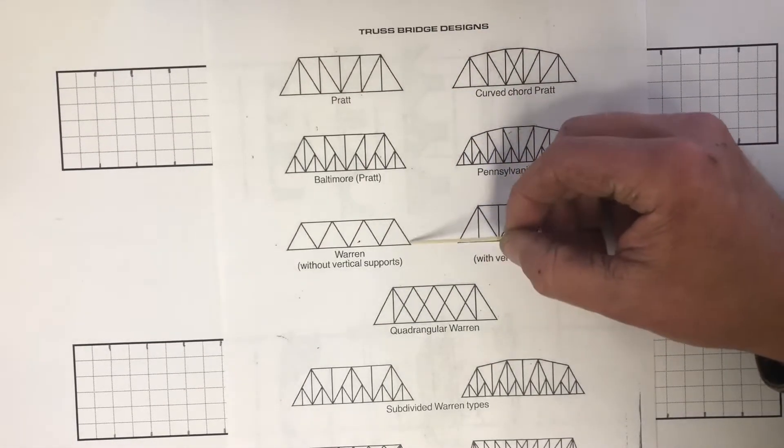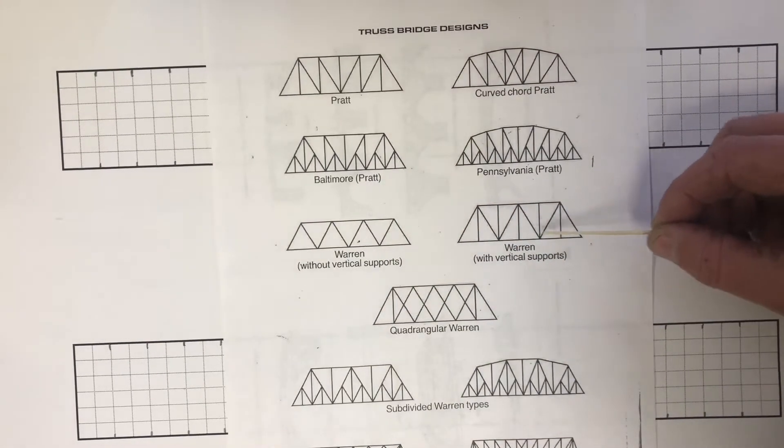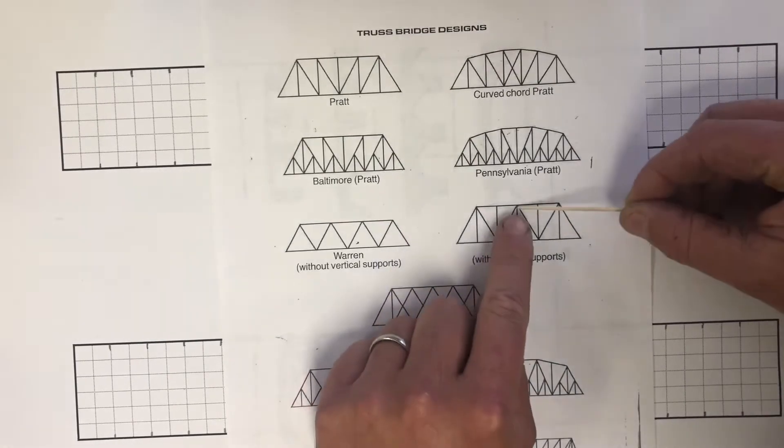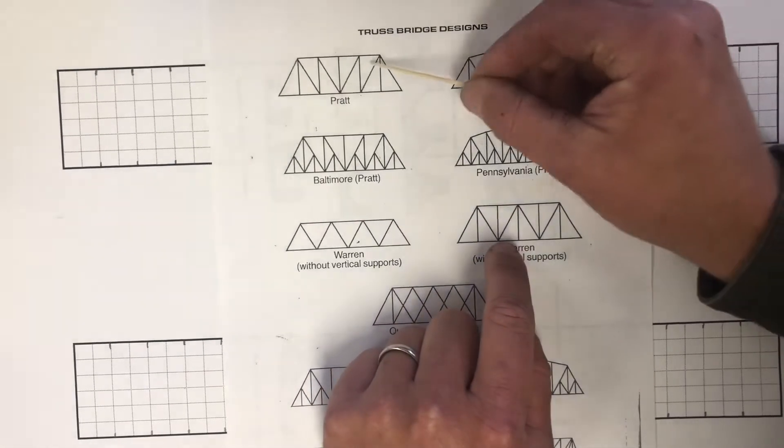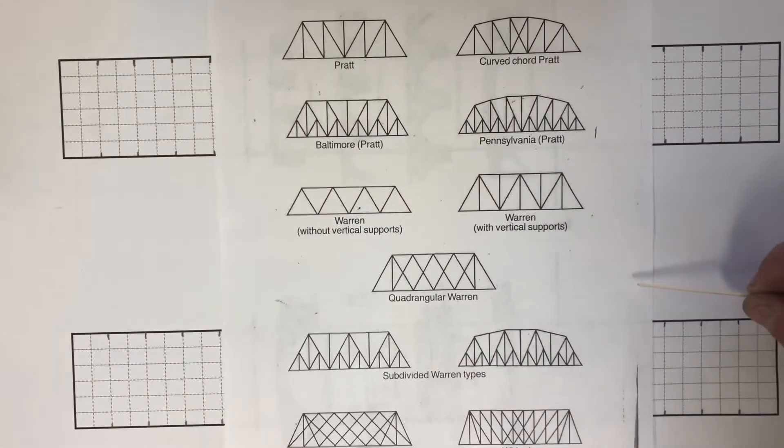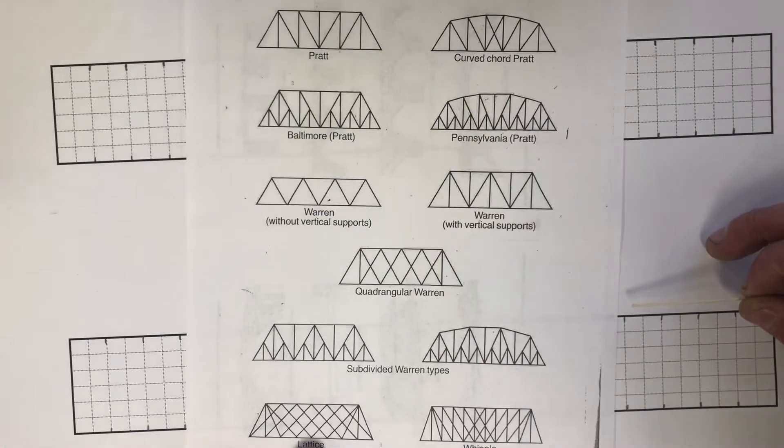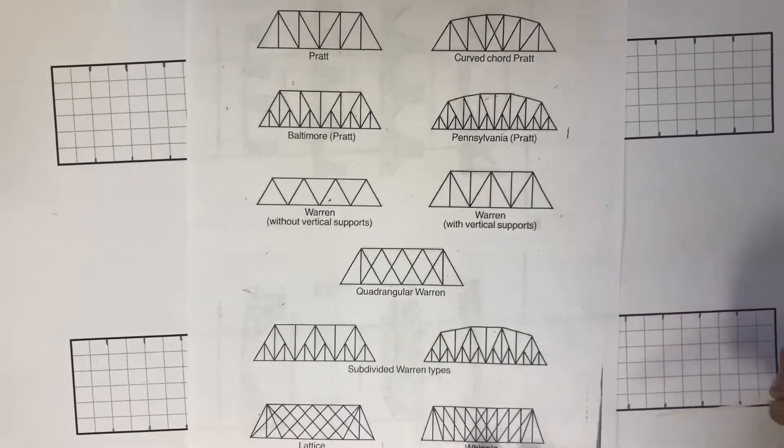You have the warren, which are equilateral triangles. You could have a warren that has vertical supports, but notice that the triangles change direction, not just going directly to the center like the prat. The third is a lattice, which is basically diagonals going everywhere.